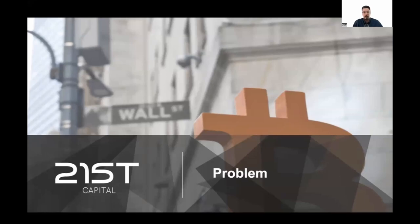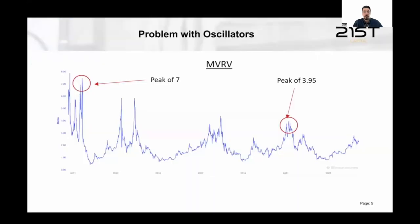What is the problem that we are trying to address? We have a lot of Bitcoin indicators and data points, but converting them into a decision-making tool is typically difficult. Building things like oscillators has proven to be complicated because Bitcoin is an evolving asset, and from cycle to cycle its behavior changes.